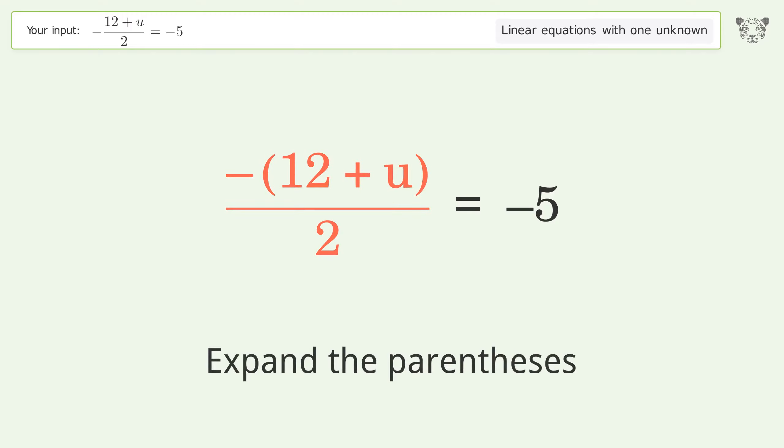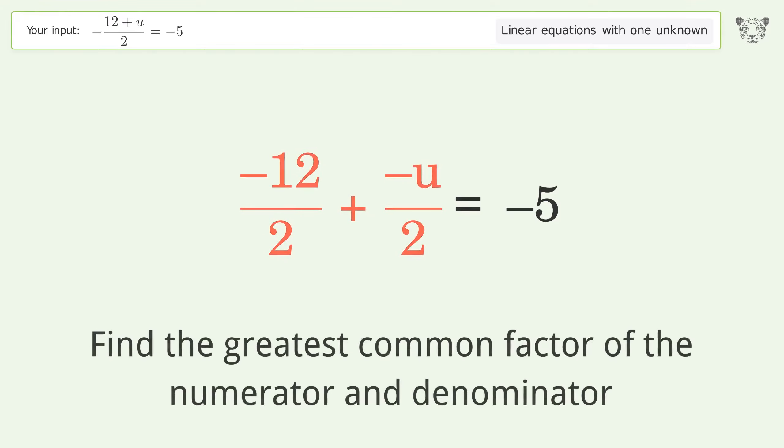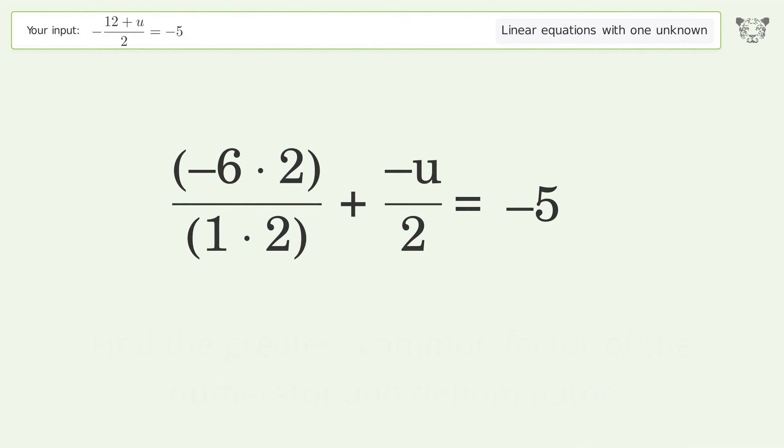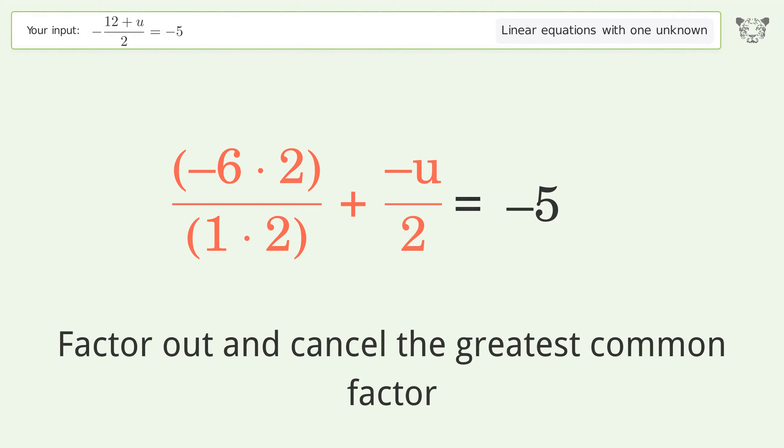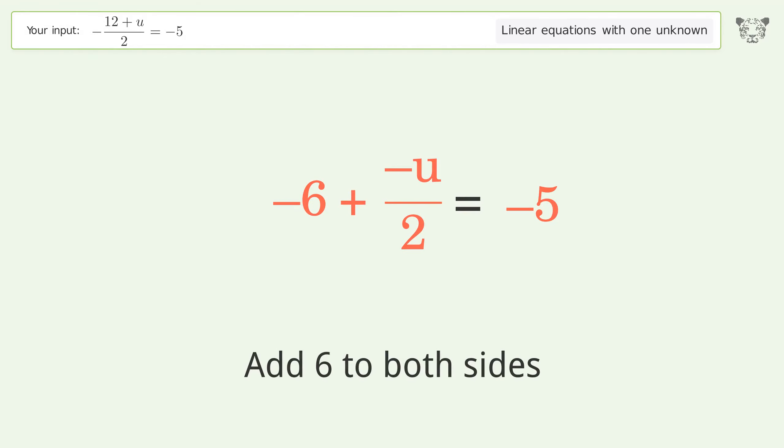Expand the parentheses. Break up the fraction. Find the greatest common factor of the numerator and denominator. Factor out and cancel the greatest common factor. Group all constants on the right side of the equation. Add 6 to both sides.